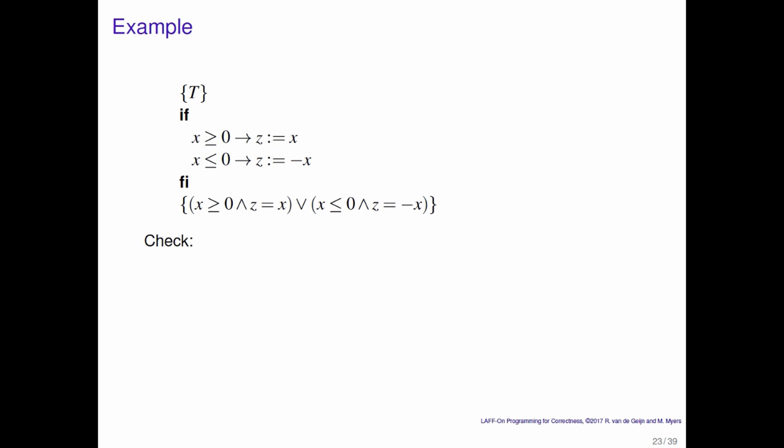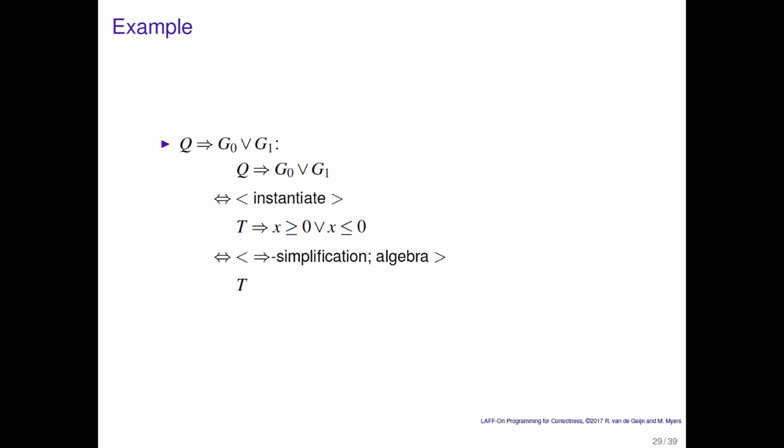What do we need to check? We need to check that Q implies G0 or G1. We need to check that Q and G0 implies the weakest precondition S0, R. And we need to check that Q and G1 implies the weakest precondition S1, R. Check the first one. That's a matter of instantiating. We can apply implication simplification to get rid of the true on the left of the implication. And then we can apply algebra to conclude that this is true.